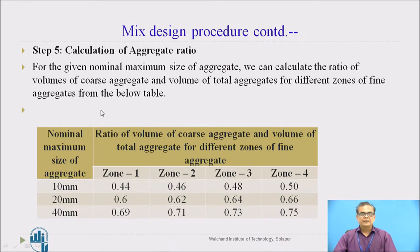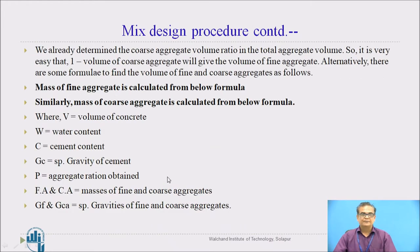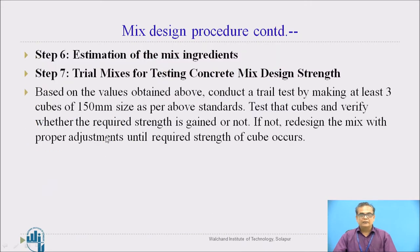For calculation of aggregate ratio, the ratios for Zone 1, Zone 2, Zone 3, and Zone 4 are found using the given tables. The mass of fine aggregate is calculated first using the relations given in the code, then the coarse aggregate. Once proportions are obtained, they cannot be used directly unless tested in the form of trial mixes, and once results are satisfactory they can be used on site.